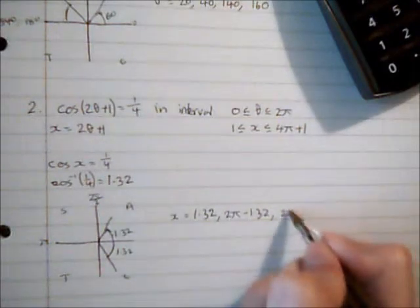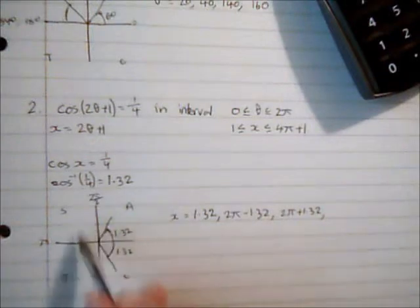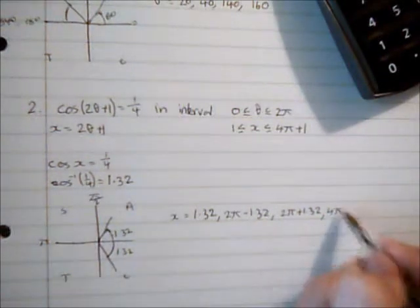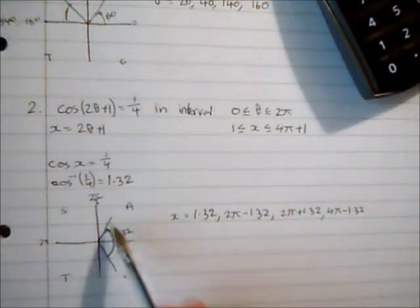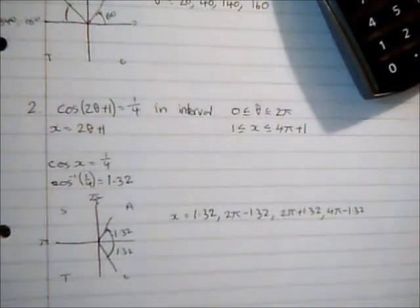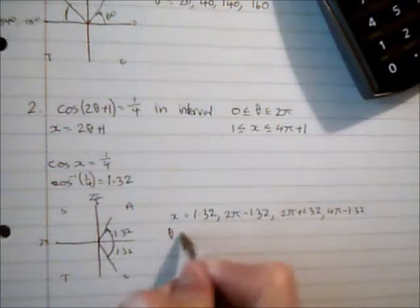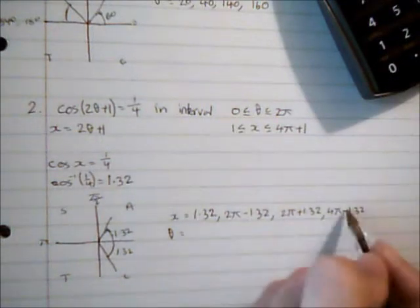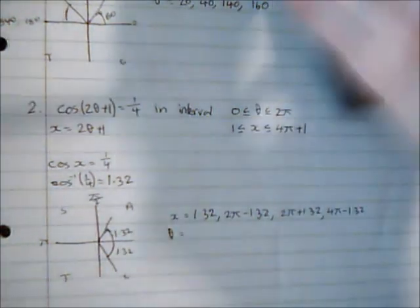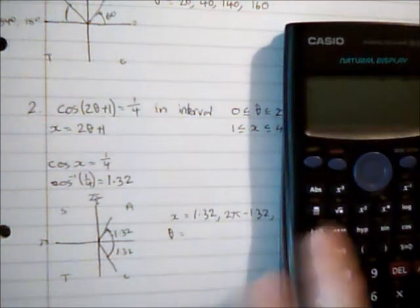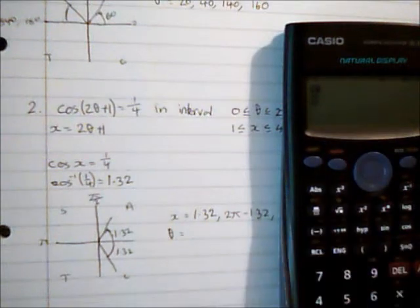This is then going to be 2 pi plus 1.32, all the way around again, that's 4 pi, so this is 4 pi subtract 1.32. As we said, here would be 4 pi plus 1.32 but that's outside of the interval. So that's our solutions for x. What about our solutions for theta? If we look at our substitution, x is 2 theta plus 1, so therefore theta is x minus 1 over 2. Rather than work out these values and then use that substitution, I'm going to do it all in one go so I don't lose any accuracy with rounding. The first one: put the angle in memory, that, subtract 1, divided by 2, gives me 0.159.